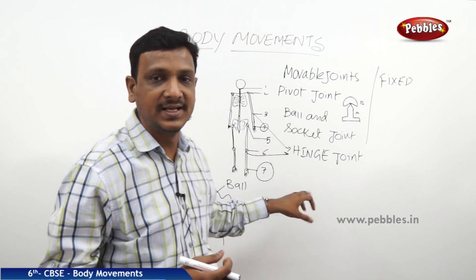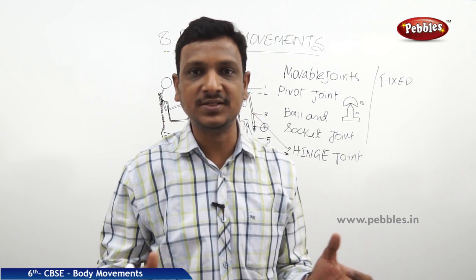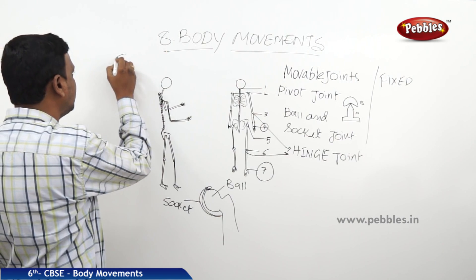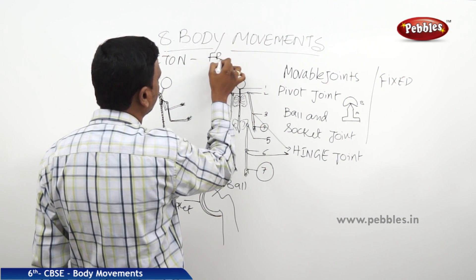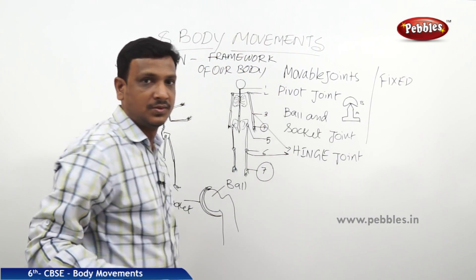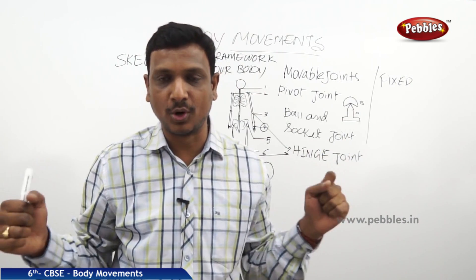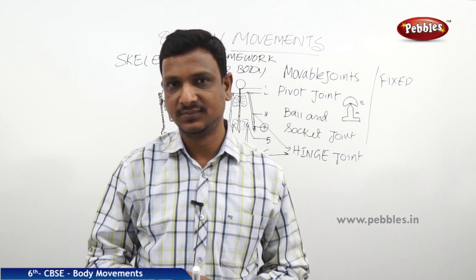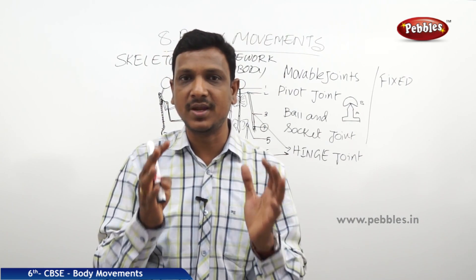The major movable joints in our body are the pivot joint, ball and socket joint, and hinge joint. Joints allow movement and are found between the bones. The collection of bones — the framework of our body — is called the skeleton. The skeleton has two main functions: it gives support and protection to our body and internal organs, and it allows us to move.